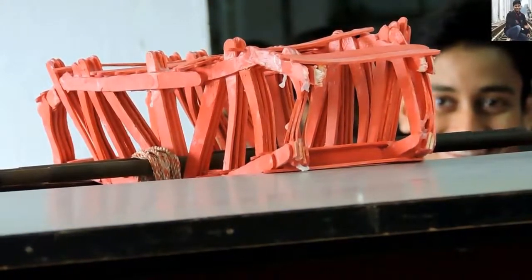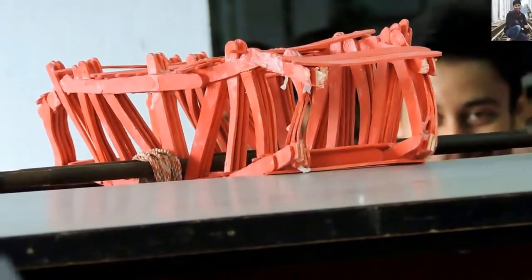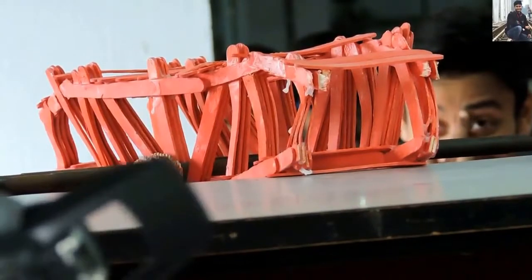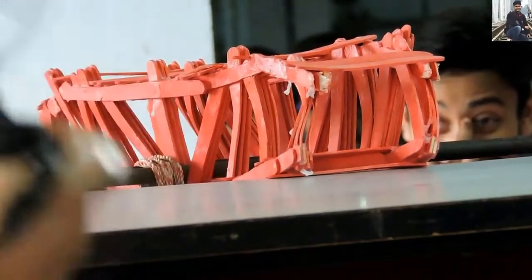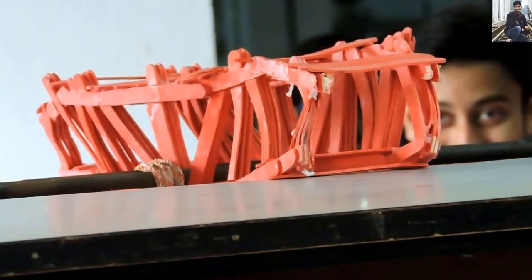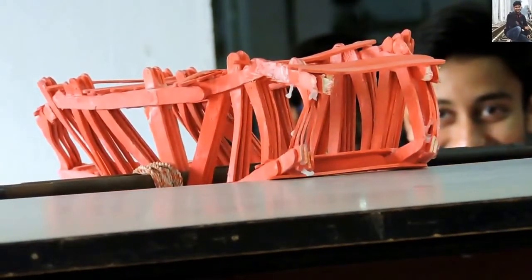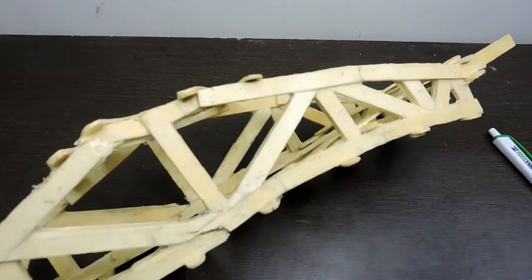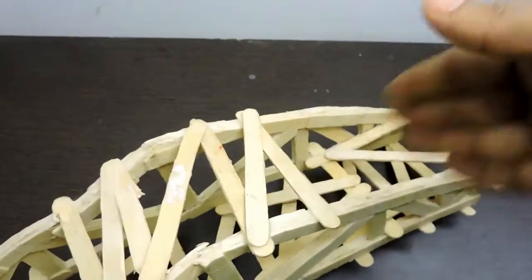Because if you are using extra sticks, then bridge weight will increase, and that will affect your bridge weight ratio. Weight ratio will decide your rank. To calculate the weight ratio, we have to divide the total weight taken by the self-weight of the bridge. Number five: after making, we have to paint the bridge with glue.